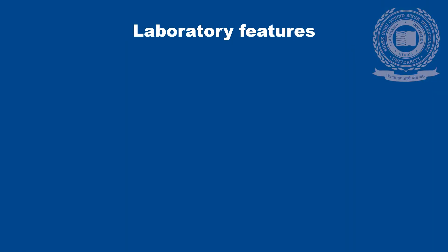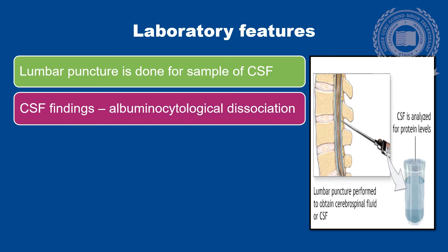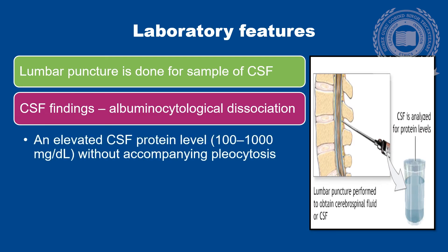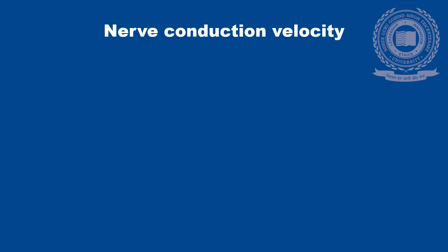After learning about the clinical features, let's discuss about the diagnostic features of Gulenbady Syndrome. The analysis of cerebrospinal fluid plays a very important role in diagnosing patients who are suffering from Gulenbady Syndrome. Lumbar puncture is done for sampling of CSF. CSF findings in these patients will show albuminocytological dissociation, which means there will be elevated CSF protein levels in the range of 100 to 1000 mg per deciliter without any accompanying rise of cells. Transient increase in the CSF white cell count in the range of 10 to 100 per microlitre can occasionally be seen in otherwise typical Gulenbady Syndrome patients.